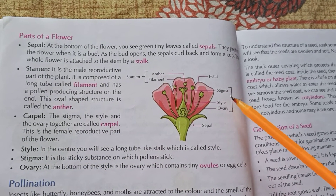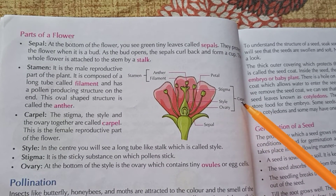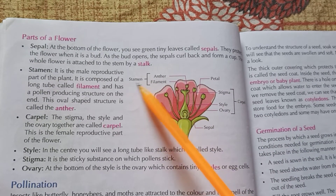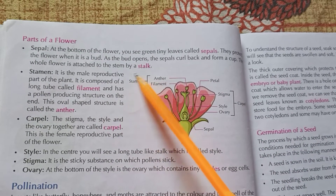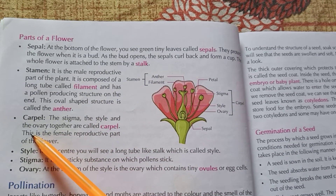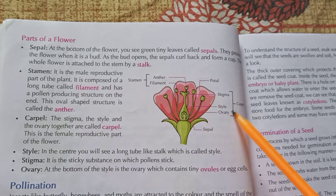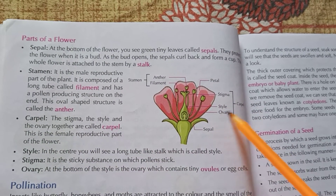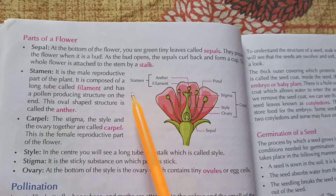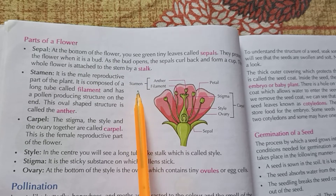The stigma, style, and ovary — these three are called carpel, like our anther and filament make up the stamen. The stamen is our male reproductive part. The carpel is our female reproductive part.